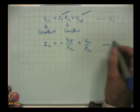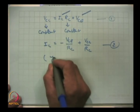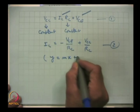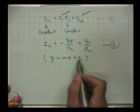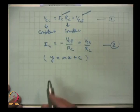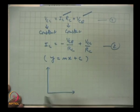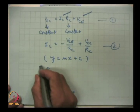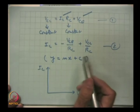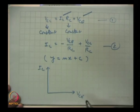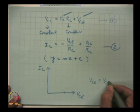This is the equation of a straight line, comparable to y = mx + c, where the slope is given by the coefficient and c is the intercept. When I_C is zero, V_CE equals V_CC — this gives one point on the axis.